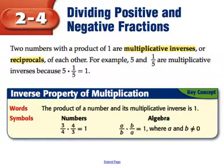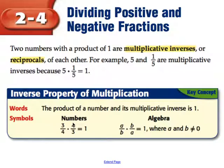So the inverse property of multiplication says that when you have two numbers that are inverses and you multiply them, you end up getting 1. So when you multiply two numbers and get 1 as a result, then they are inverses of each other.